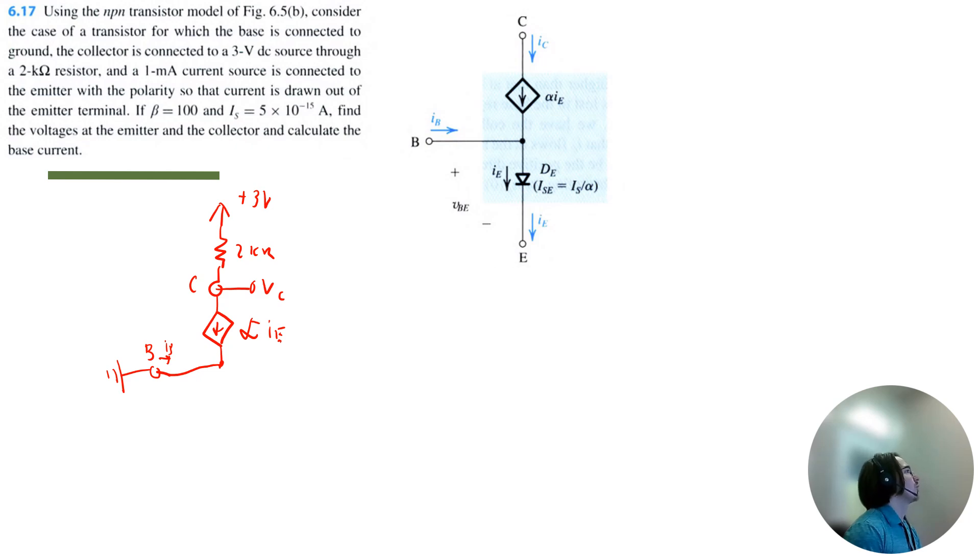Then we have a 1 milliamp current source. The polarity is such that the current is drawn out of the emitter terminal. So that means we're going to have the diode first. This is the emitter diode. We're going to have the voltage at the emitter right there, and then current is coming out of the emitter terminal like that.